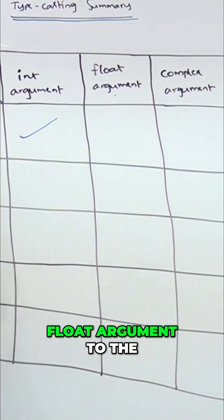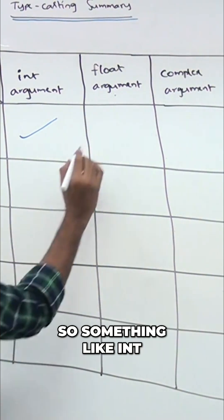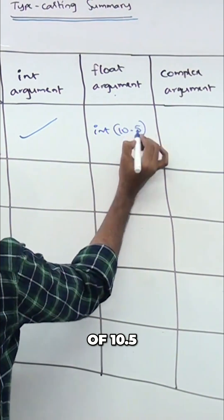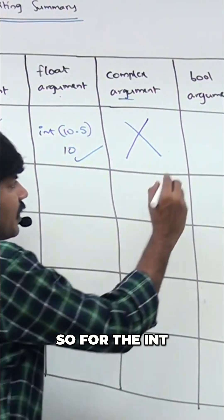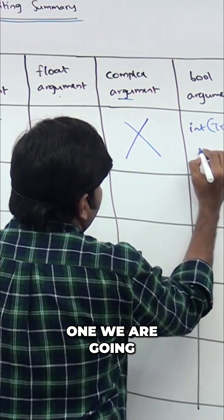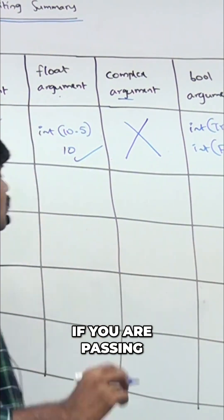If you are passing a float argument to the int function, something like int(10.5), what will happen? For int(true), true means one, so we get 1. If you are passing a string argument to the int function...